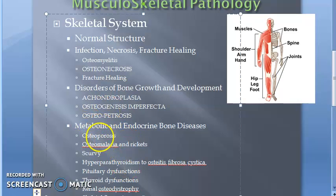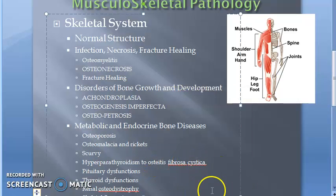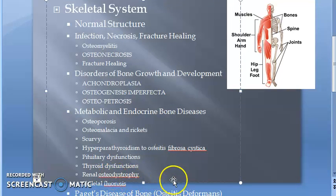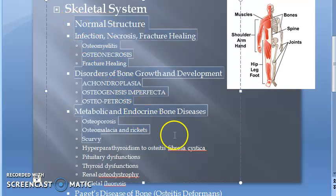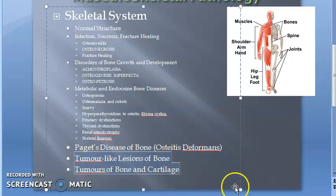Then metabolic disorders: osteoporosis, osteomalacia, rickets, scurvy, osteitis fibrosa cystica, pituitary dysfunction, thyroid dysfunction, renal osteodystrophy, skeletal fluorosis. Then Paget's disease of bone — osteitis deformans — tumor-like lesions of bone, and tumors of bone and cartilage.